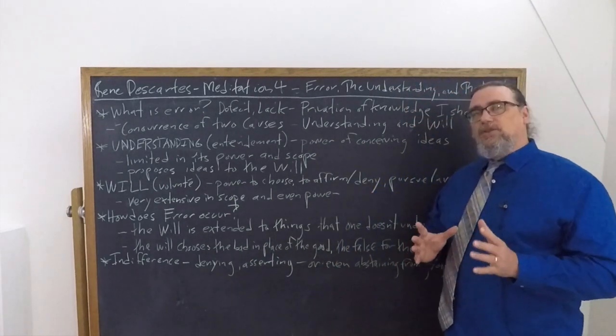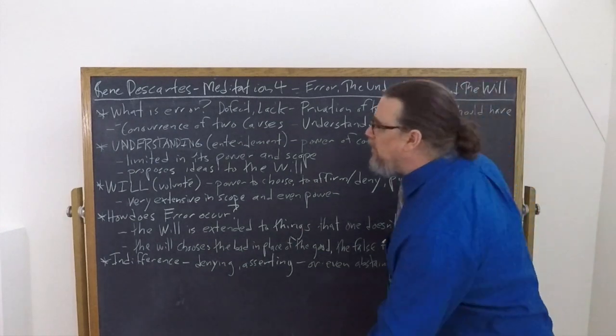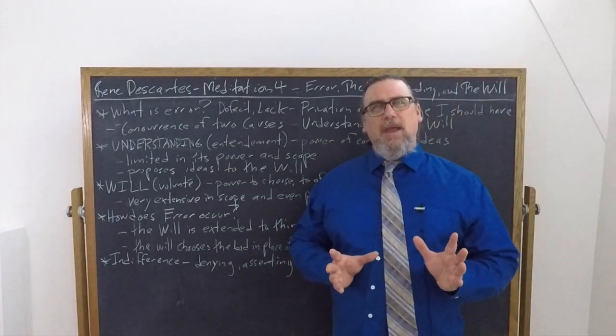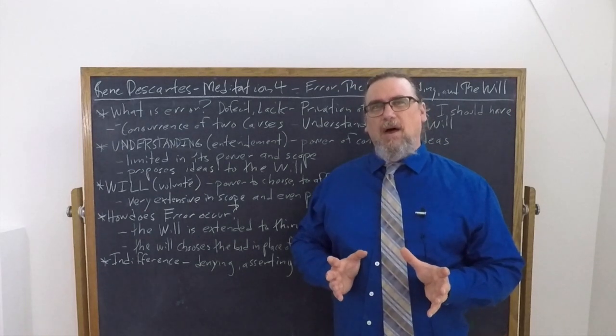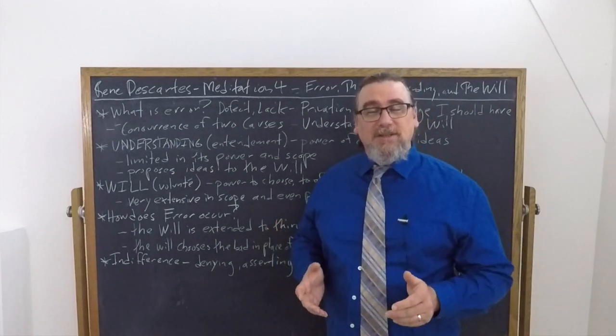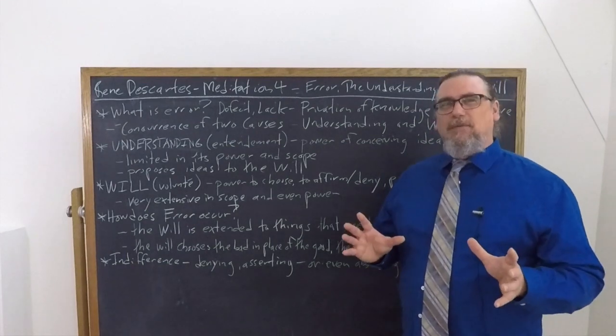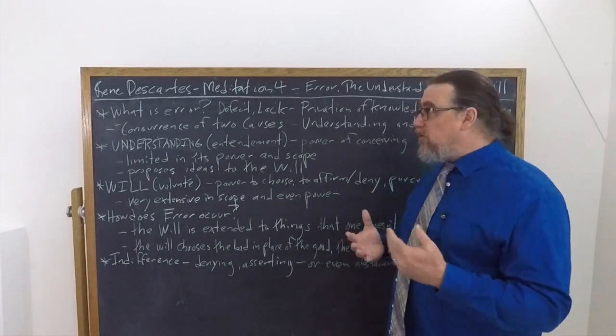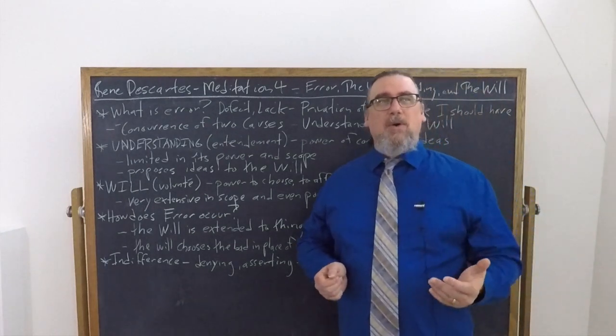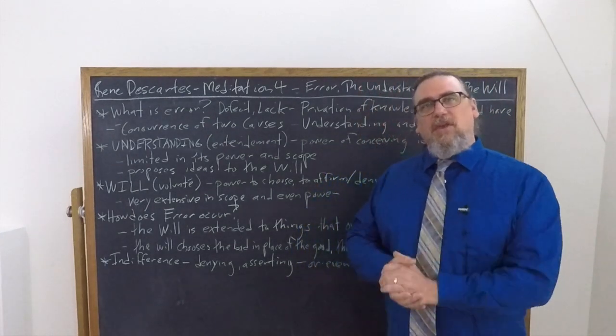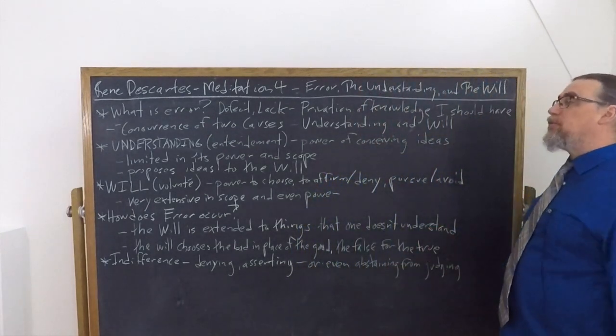That's what leads us to go astray, to mistake the false for the true or the bad for the good. And Descartes is going to tell us that it happens not in a simple way, but because of a concurrence of two, and he calls them causes. Now, neither of these we should preface is by itself a cause of error. These are two faculties, two powers, as he says, within the human being, the human mind specifically.